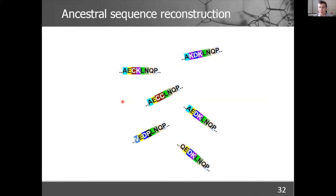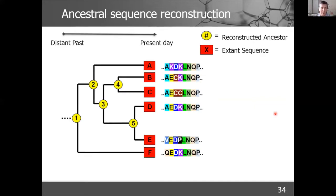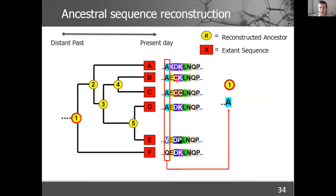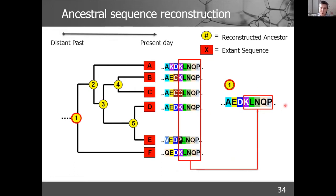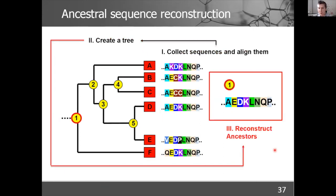Ancestral sequence reconstruction works as follows: gather homologous sequences, align them into a multiple sequence alignment, construct a phylogenetic tree, then select any node and reconstruct that ancestral protein. On each position you check the most conserved residues based on evolutionary models — essentially a weighted consensus — and go step by step to reconstruct the ancestral sequence. In summary: collect sequences, perform multiple sequence alignment, construct the tree, and reconstruct ancestors.